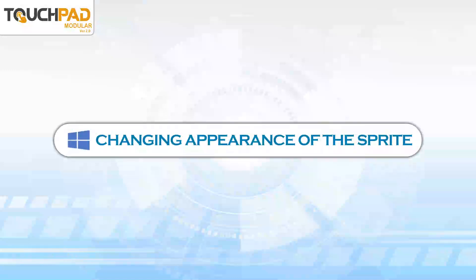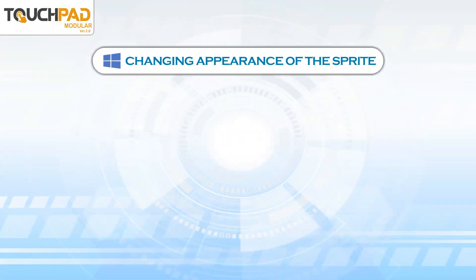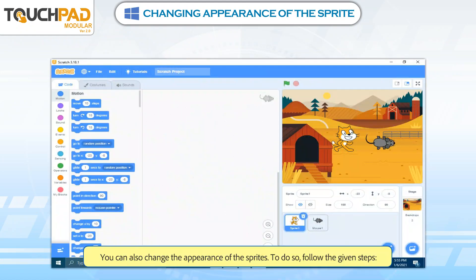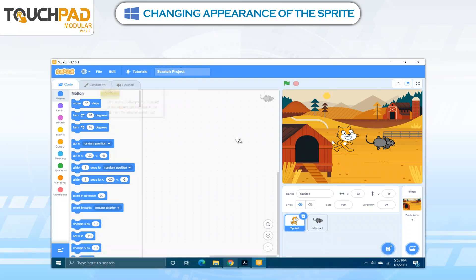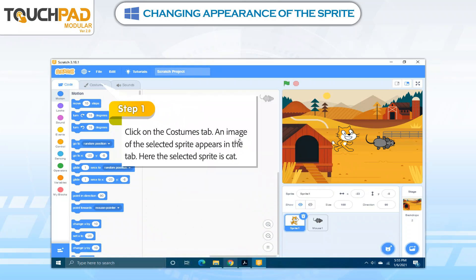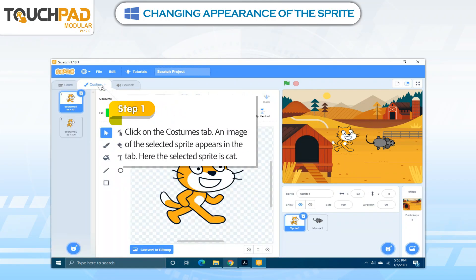Changing Appearance of the Sprite. You can also change the appearance of the Sprites. To do so, follow the given steps. Step 1: Click on the Costumes tab. An image of the selected Sprite appears in the tab. Here, the selected Sprite is cat.